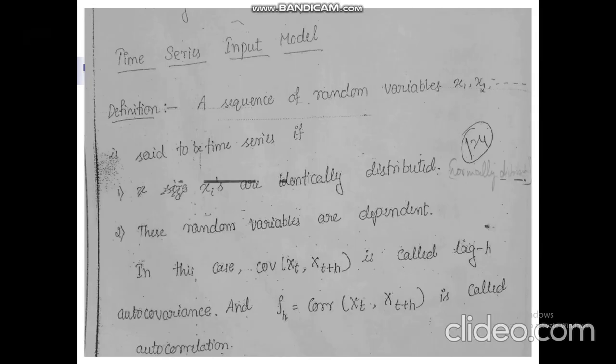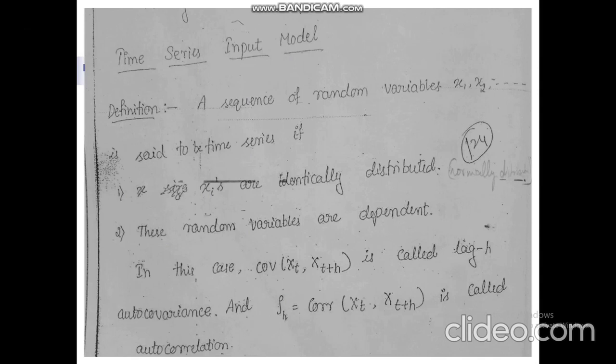The definition of a time series input model: it is a sequence of random variables represented by x1, x2, x3, ..., xn. It is said to be a time series if the variables xi are identically distributed — that is, normally distributed — and also if the random variables are dependent.